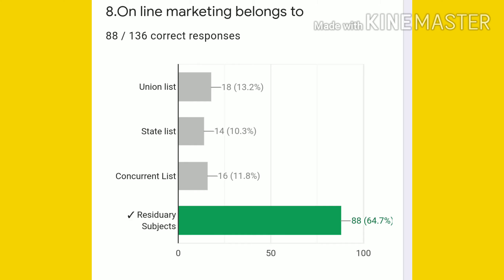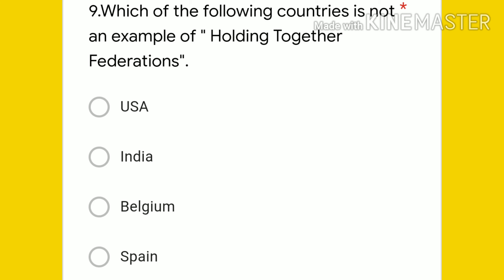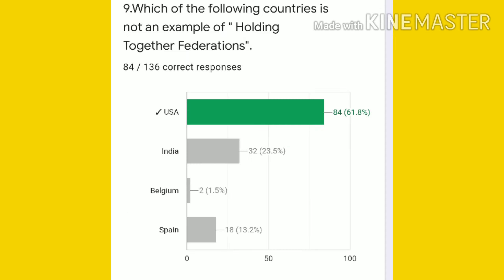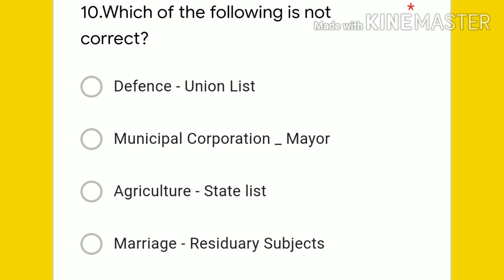Ninth question: which of the following countries is not an example of holding together federations — USA, India, Belgium, or Spain? The answer is USA, because it is a coming together federation, not a holding together federation. 84 students gave the right answer.